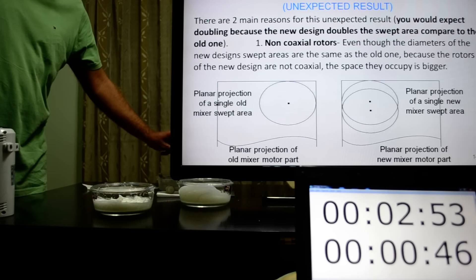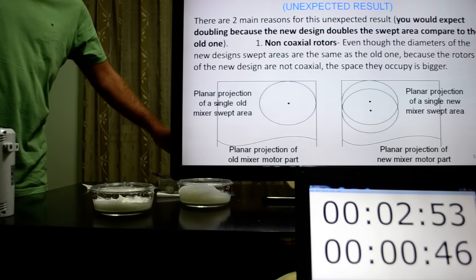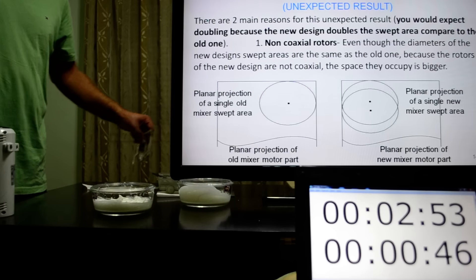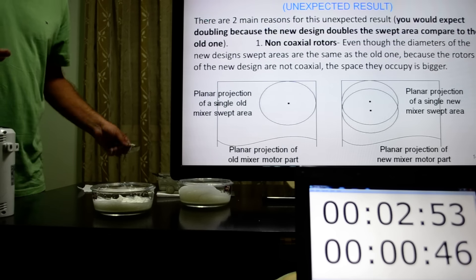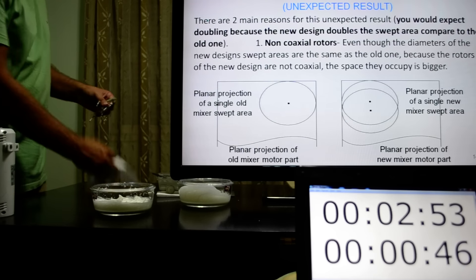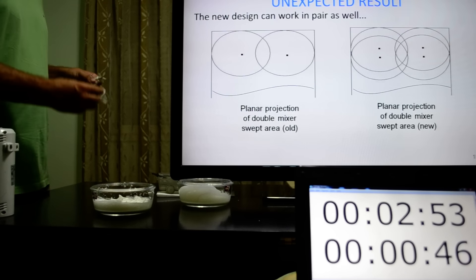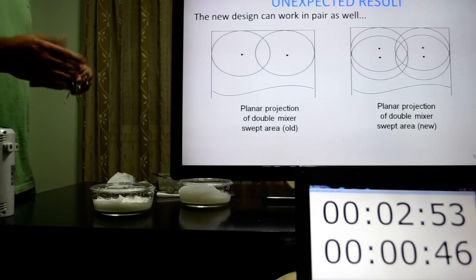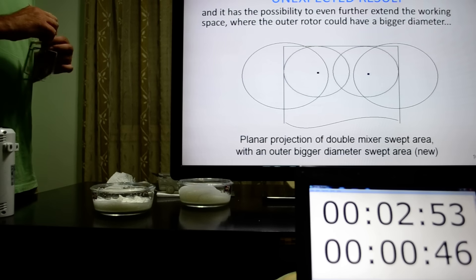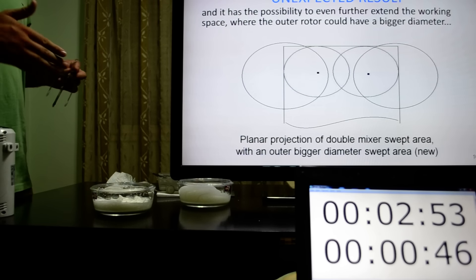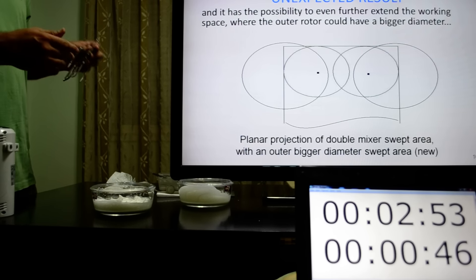There are two main reasons for this unexpected result. You would expect doubling because the new design doubles the swept area compared to the old one. Now, even though the diameters of the new design swept area are the same as the old one, because the rotors of the new design are not coaxial, the space they occupy is bigger. The new design can work in pairs as well and has the possibility to even further extend the working space, where the outer rotor could have a bigger diameter.